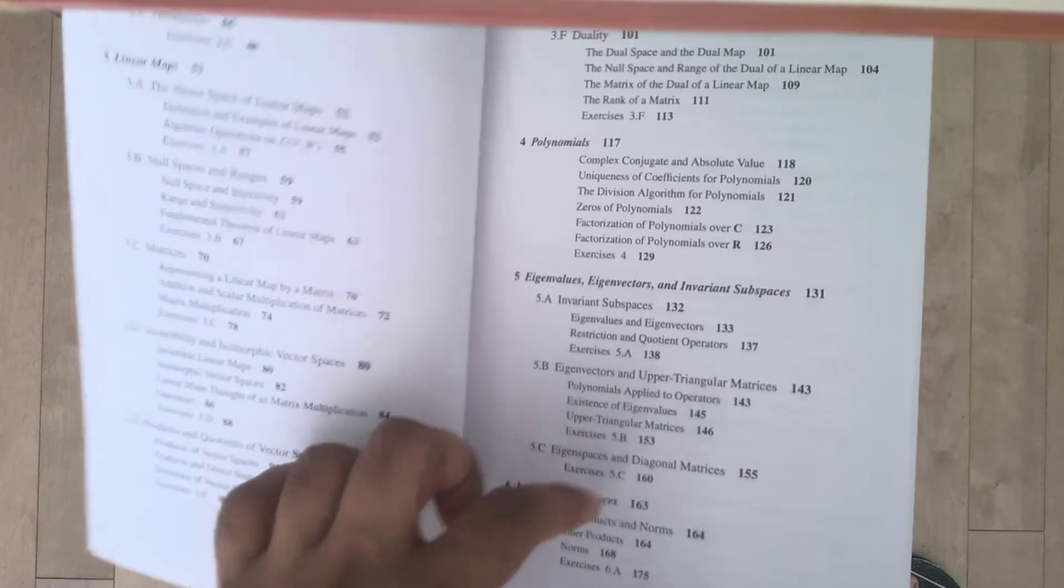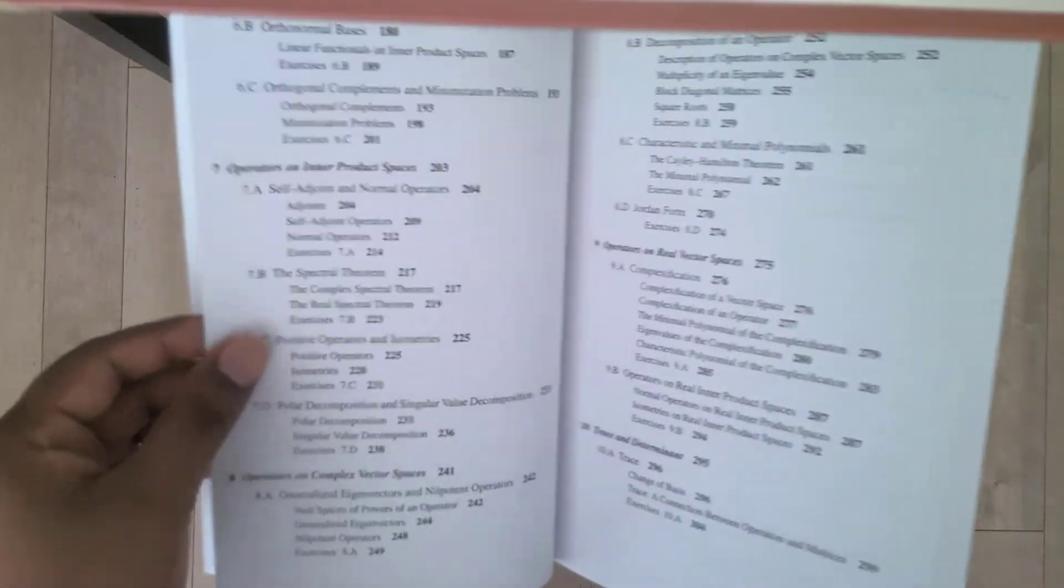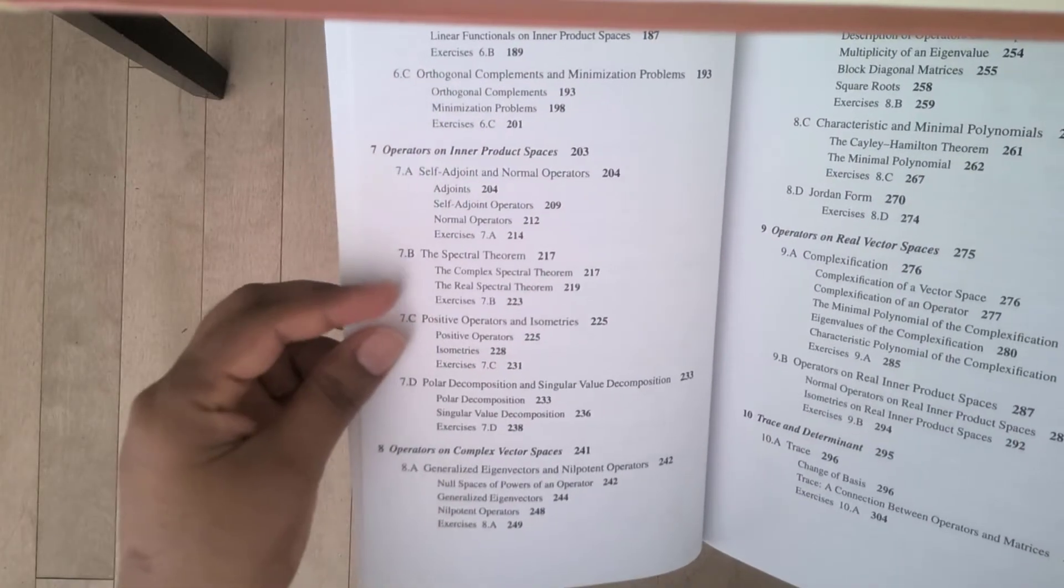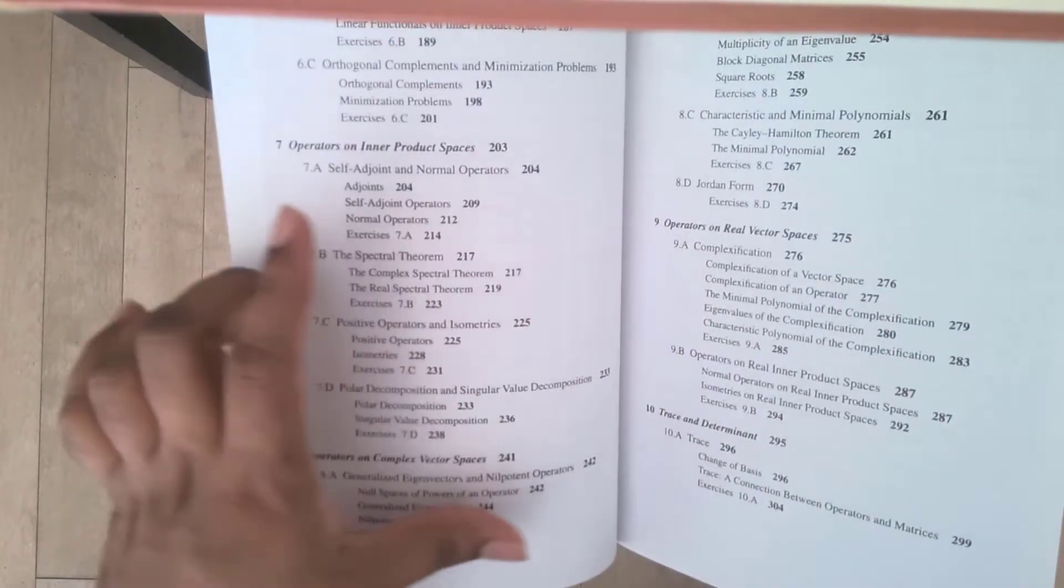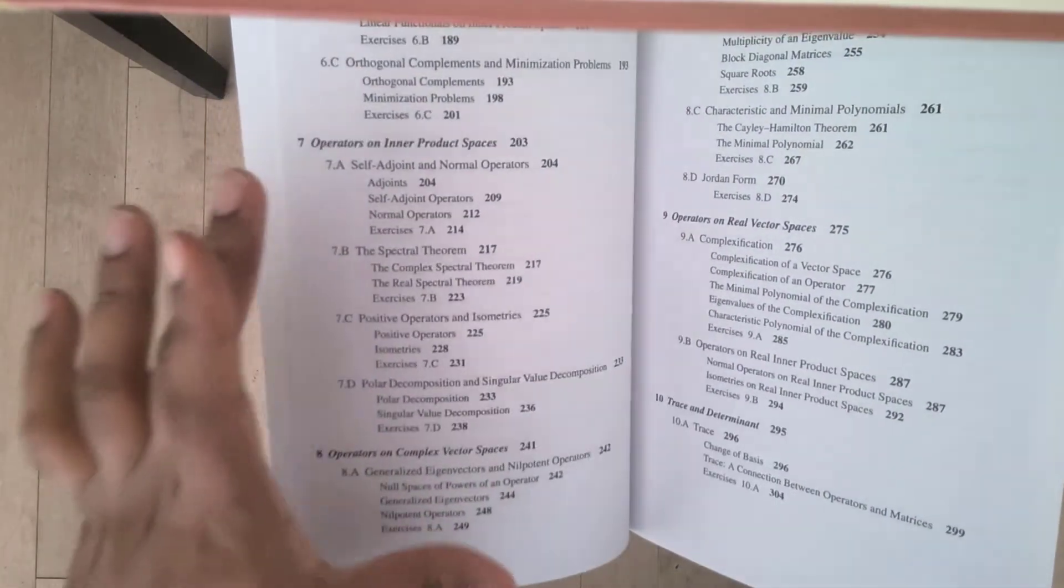It goes into eigenvalues, eigenvectors, inner product spaces, and so on. And then it starts talking about operators on inner product spaces, operators on complex vector spaces, and operators on real vector spaces. So this book is big on the theory of operators.